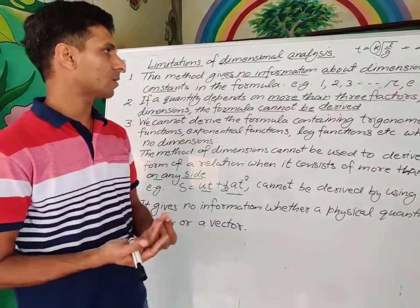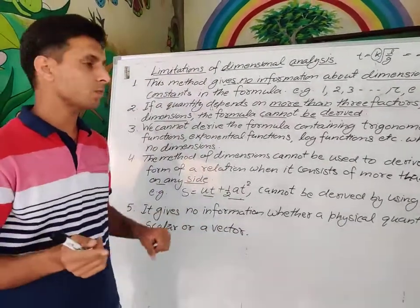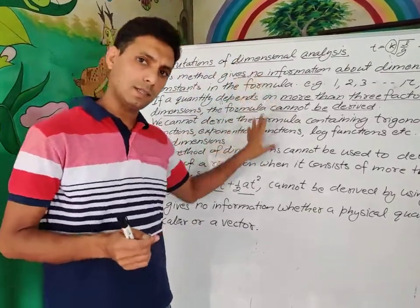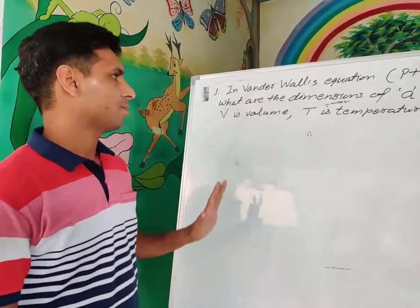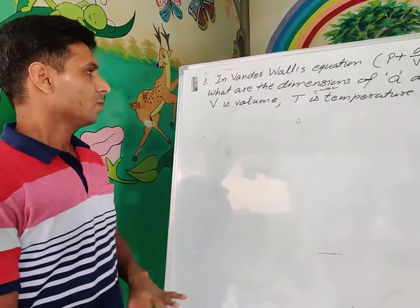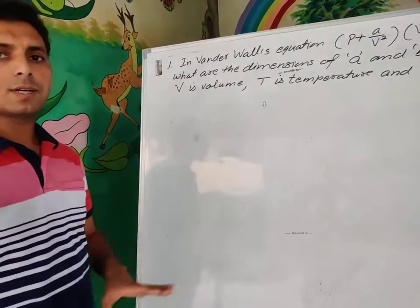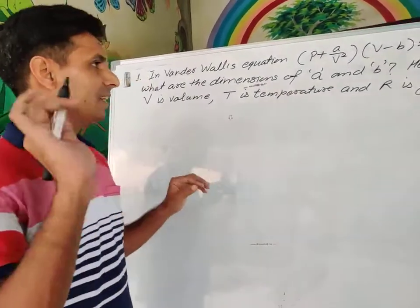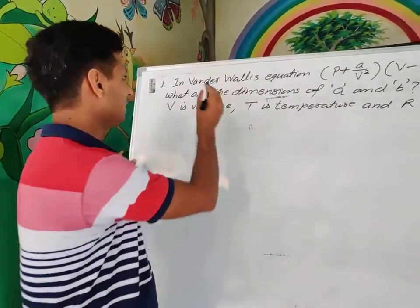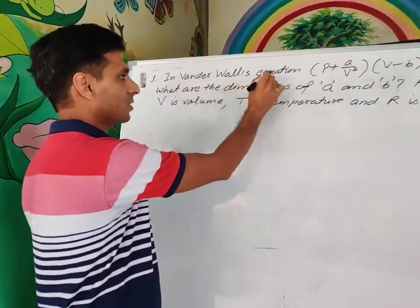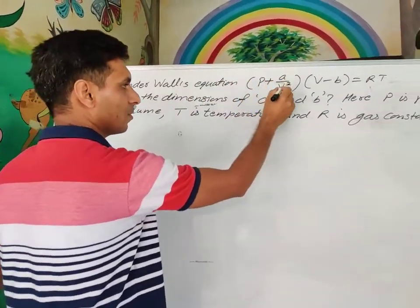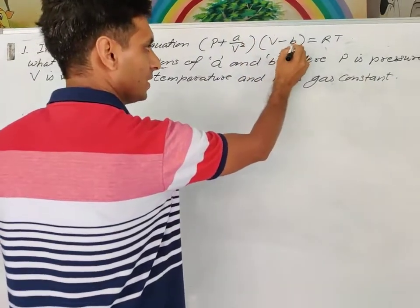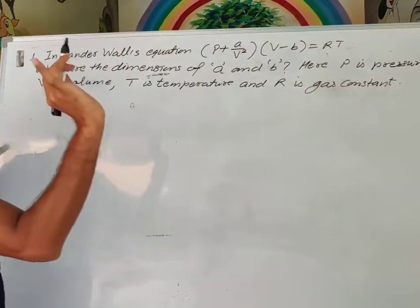Now we will solve some very important questions by using dimensional analysis. Here is the question — a simple one. In Van der Waals' equation: (P + A/V²)(V − B) = RT. What are the dimensions of A and B? Here P is pressure, V is volume, T is temperature, and R is the gas constant.